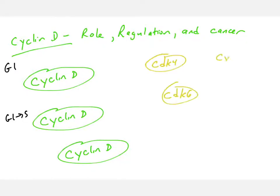To talk about the function of cyclin D, we have to talk about its partners: proteins called cyclin-dependent kinases, or CDKs. The cell makes a number of these CDKs, and these kinases are inactive in the cell unless they bind their partners, which are in fact cyclins — hence the name cyclin-dependent kinases.